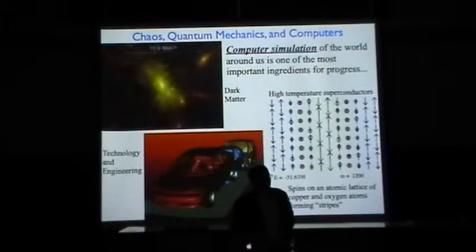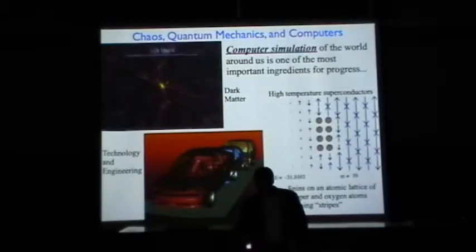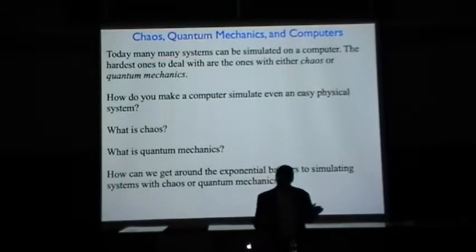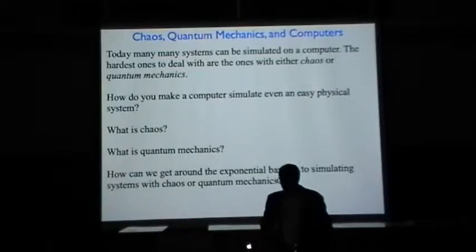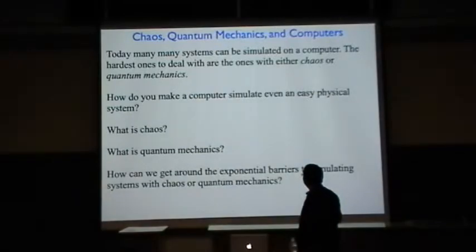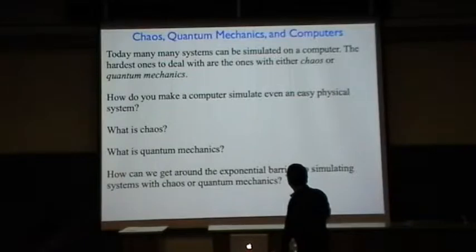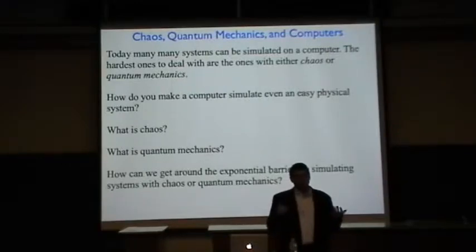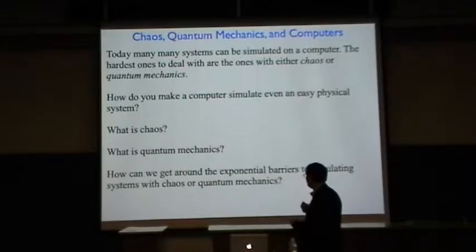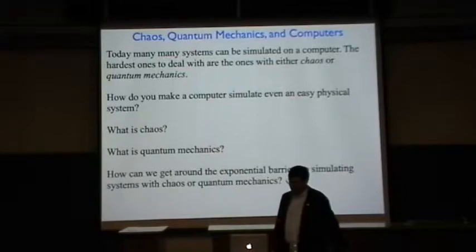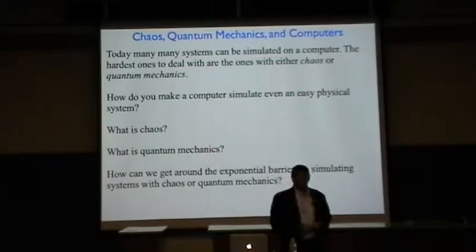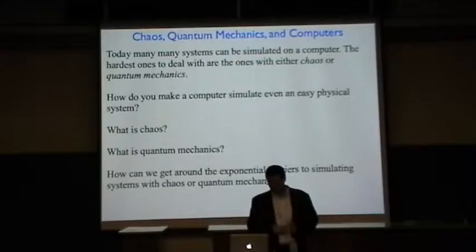So this talk is not really about these particular examples. It's more focused on what it means to do a simulation and the bottlenecks we encounter when we do simulations. The hardest, the biggest problems with simulations are when we have either chaos or quantum mechanics. I'll start by reviewing how we simulate any physical system, even an easy one that's not subject to chaos or quantum mechanics, and how do you put that on a computer. Then what is chaos? What is quantum mechanics? How do they make life difficult? And then how can we get around the exponential barriers that arise in both situations with very similar approaches?